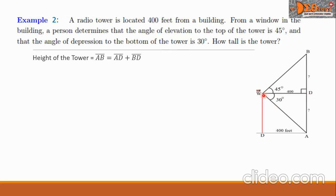In the problem, from this window the angle of elevation is 45 degrees to the top, and the angle of depression to the bottom of the radio tower is 30 degrees. The distance from the window to the radio tower is 400 feet. We can see in our figure that we have two right triangles: triangle BWD and triangle ADW. We are going to compute AD and BD separately using separate triangles.